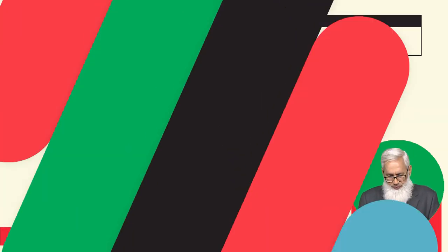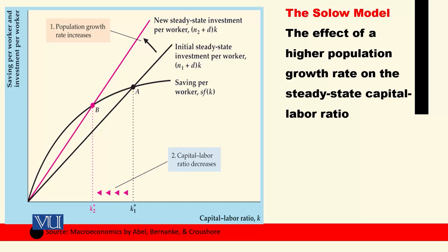Let's see this with the help of a diagram. In this diagram, this is the initial steady state investment per worker line — this is (n1 + d) times k, where n1 is the initial population growth rate and d is the depreciation rate. The red line represents a higher population growth rate, where n2 is greater than n1. The initial equilibrium point A is determined by the saving curve and the initial (n1 + d)k line, giving us the equilibrium levels of k, y, and c.